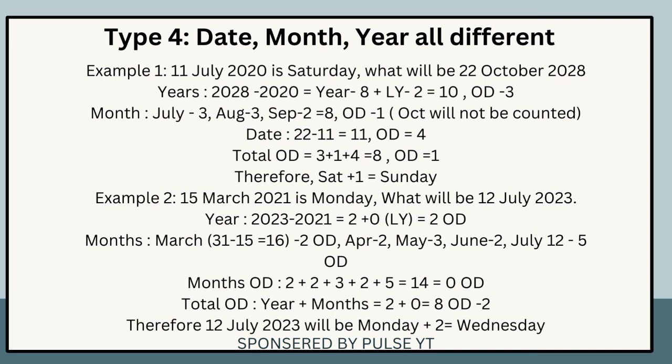Example 2: The 15th of March 2021 is Monday; what will be the 12th of July 2023? Years: 2023 − 2021 = 2 years + 0 leap years in range = 2 odd days. Months: March remaining = 31 − 15 = 16 days = 2 odd; April = 2; May = 3; June = 2; total months = 2 + 2 + 3 + 2 = 9... evaluating: 14 ÷ 7 = 0 odd days. Total odd = 2 + 0 = 2 odd days.